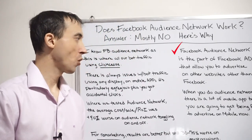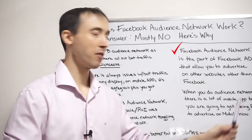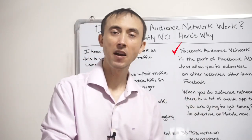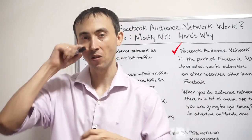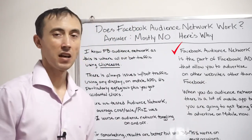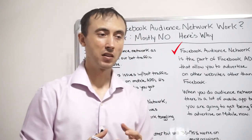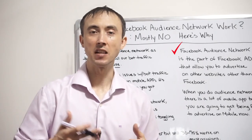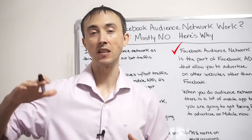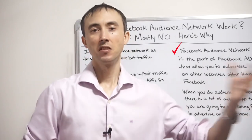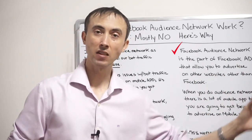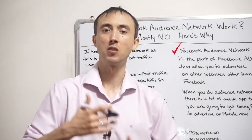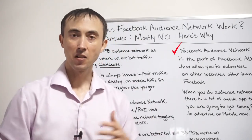When you do Audience Network, there are a bunch of mobile apps that Facebook has partnered with, primarily to give advertisers more options to advertise outside of Facebook and expand Facebook's revenue opportunities. Website owners already have plenty of advertising options, whereas monetizing a mobile app has fewer options. Facebook came in and said they'd pay app owners a little bit more than Google's mobile ad network, playing the middleman and taking a part of the advertising revenue.